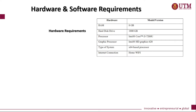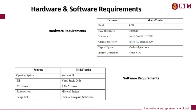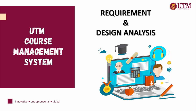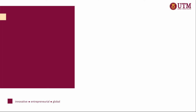Here we have the hardware and software requirements. Hardware requirements include RAM, hard disk, processor, graphics processor, type of system, and obviously internet connection. Software requirements include operating system, code editor, web server, and a scheduler for editing project timelines. We also have design tools.